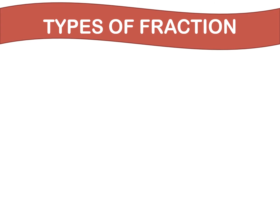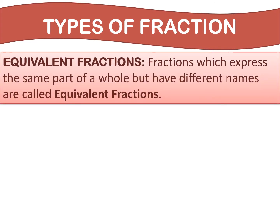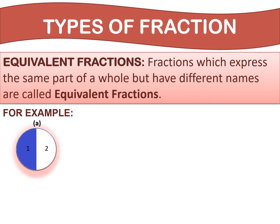Let me explain you one by one. Number 1, equivalent fractions. Fractions which express the same part of a whole but have different names are called equivalent fractions. For example, see the given circle. In figure A, the circle is divided into two equal parts, so each part is one half. So the fraction of the blue part is one upon two.